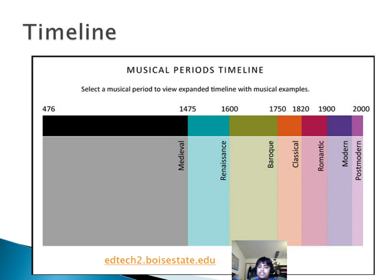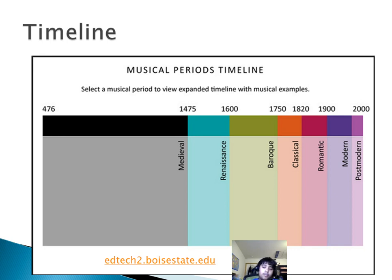From 1600 to 1750 was the Baroque musical period, from 1750 to 1820 was the classical musical period, 1820 to 1900 was the Romantic period, and 1900 to now is the modern and postmodern period. This timeline is from edtech.boisestate.edu — the link is at the bottom.